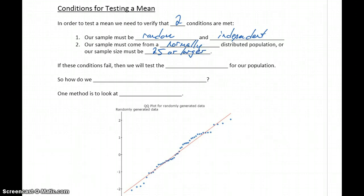If there are 25 values or more in our sample size, that condition is met, but in the case where we have smaller sample sizes, we need to assess normality. If those conditions aren't met, we'll turn to the median as our alternative measure of center and test a claim about that.